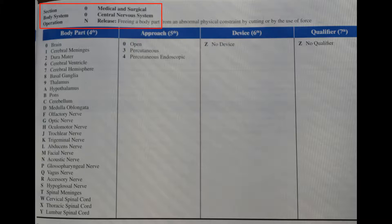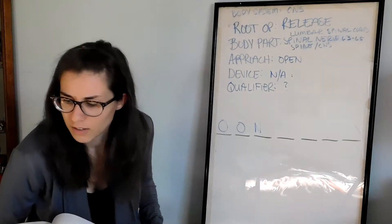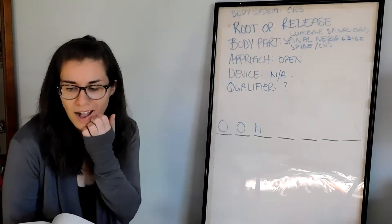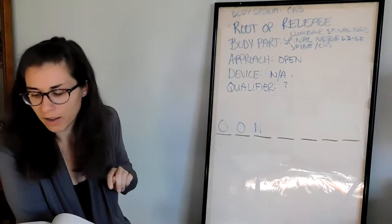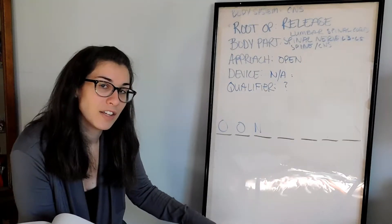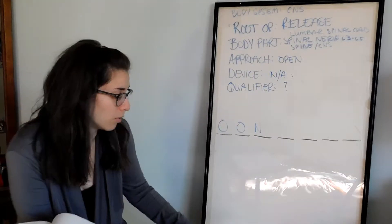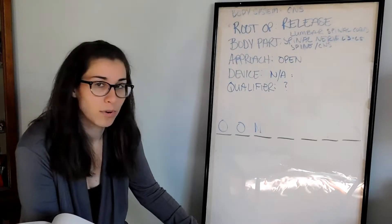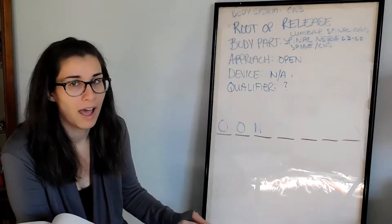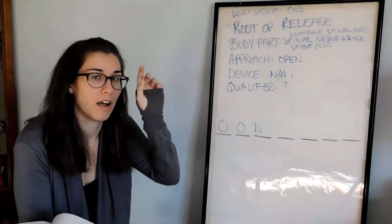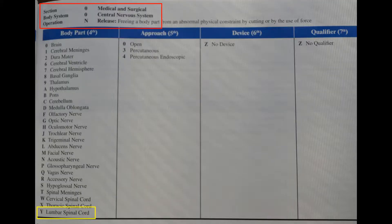Now let's go to our body part column, which is our fourth character of our code. And we want to look for lumbar spine. Since in this operative report and procedure, they were doing a decompressive laminectomy of L3 through L5, we are in the lumbar spine of the spinal cord. So if we look all the way down this table, we get to a lumbar spinal cord, which is a Y.